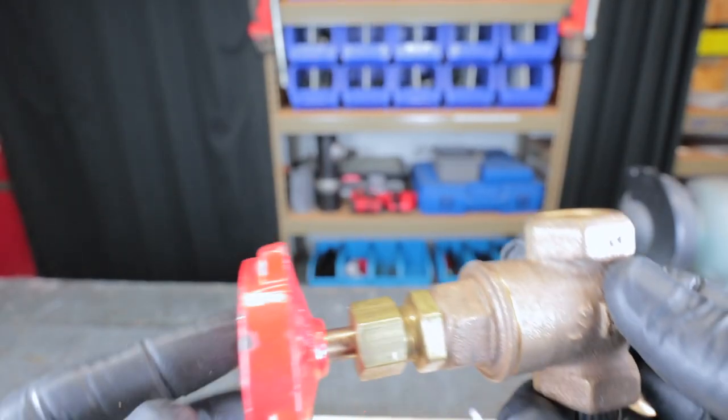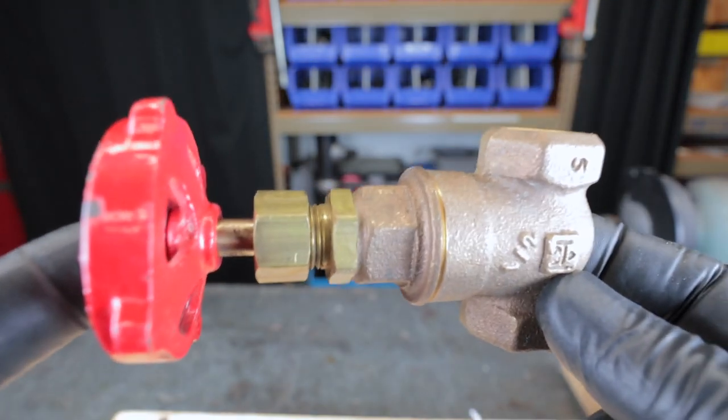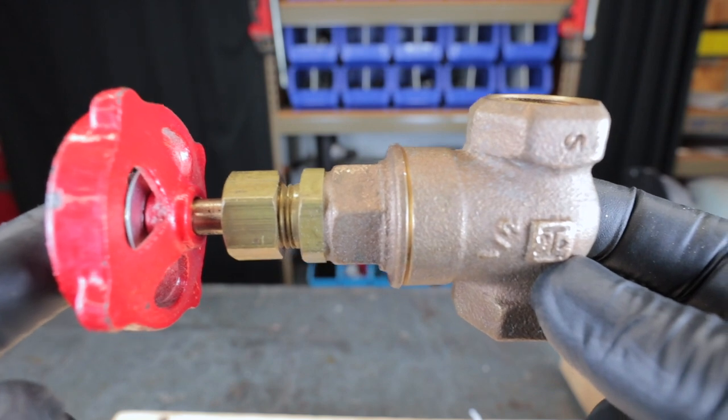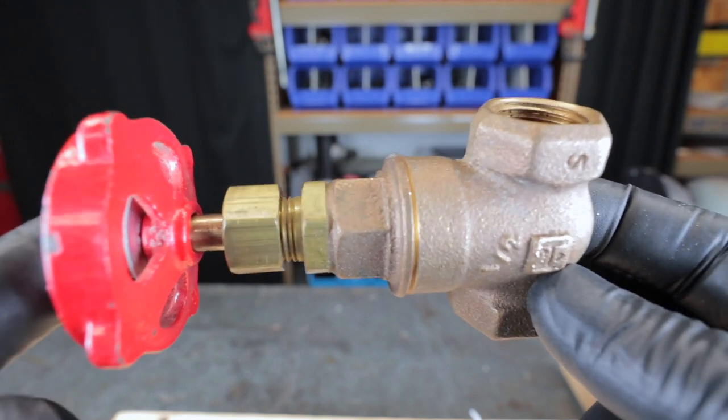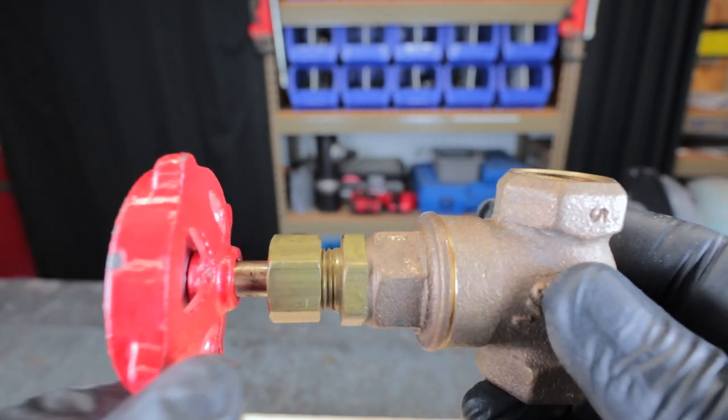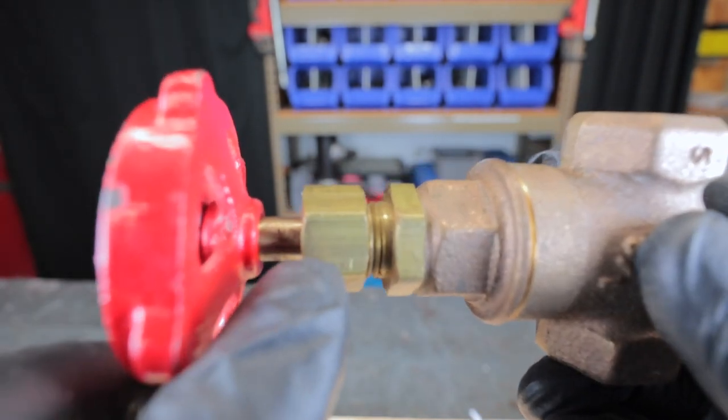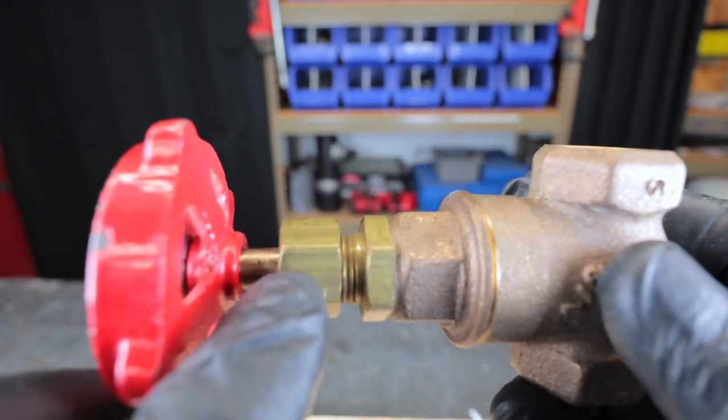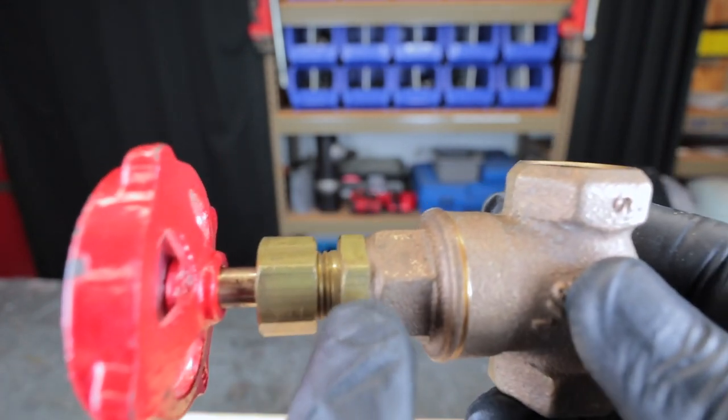Alright so quickly let me just bring up this gate valve I have here. You'll see all about the gate valve and the globe valve in that video I told you to check out. In the gate valve or globe valve, the packing is located right here in this packing nut which is kind of on the outside of the valve.